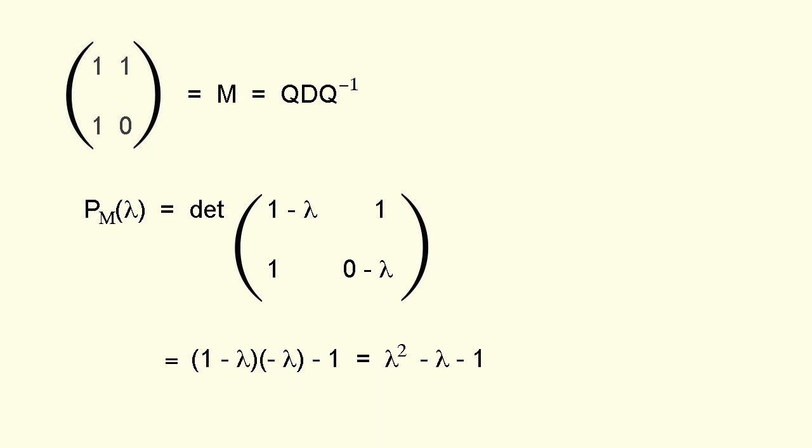To find d we first need to calculate the determinant of a variant of the matrix m. This variant is obtained by subtracting an as yet unknown value lambda from each element on the main diagonal of m and leaving the other elements unchanged. Now we take the determinant of the variant of the matrix m. This gives us what's known as the characteristic polynomial of m, p sub m lambda. And expanding the determinant gives 1 minus lambda times minus lambda minus 1 which equals lambda squared minus lambda minus 1.